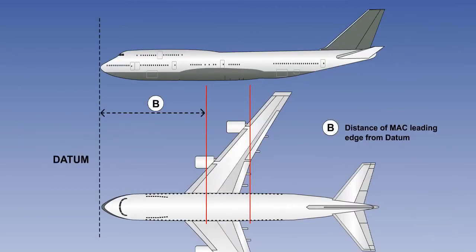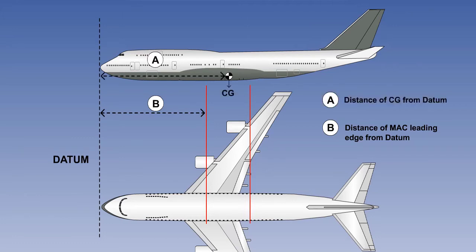We can now calculate the centre of gravity as the percentage of the Mean Aerodynamic Chord. The length of the Mean Aerodynamic Chord is constant and is a fixed distance from the datum. The first distance to use is the distance of the leading edge of the Mean Aerodynamic Chord from the datum, indicated by the letter B. The second distance is the distance of the centre of gravity from the datum, indicated by the letter A. The length of the Mean Aerodynamic Chord is allocated to the letter C.